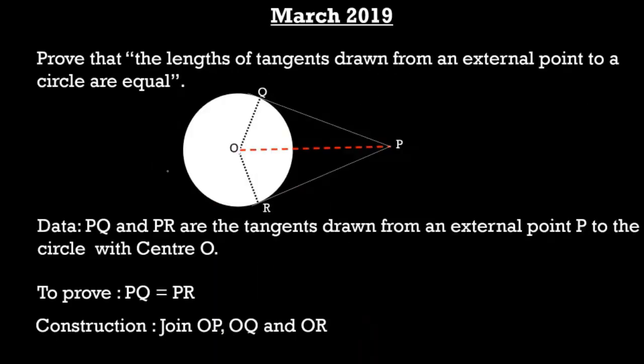The second question from March 2019 is: prove that the lengths of tangents drawn from an external point to a circle are equal. I have already explained this question.